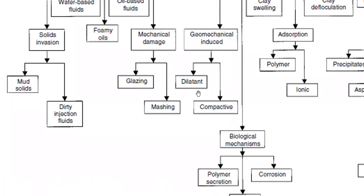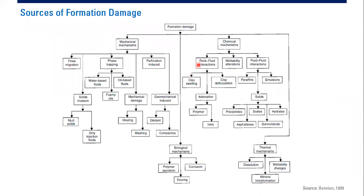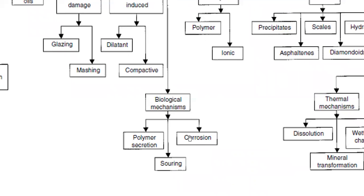We also have biological mechanisms. Biological mechanisms can occur in the form of polymer secretion, corrosion, and souring. Talking about biological mechanisms, it must involve bacteria. Bacteria produce secretion products that can generate polymers, and also cause corrosion and souring. This is a significant formation damage topic and hopefully we can cover it in the future.